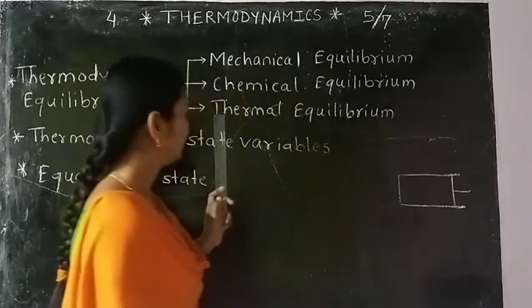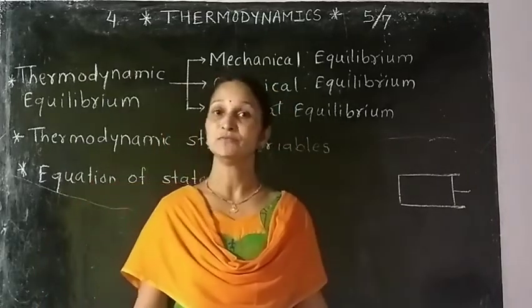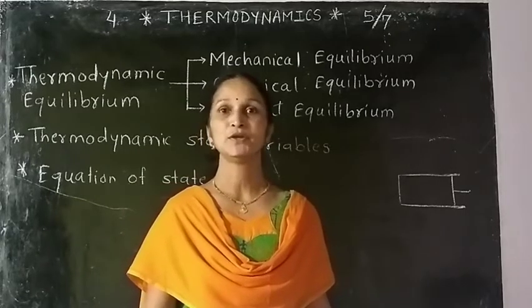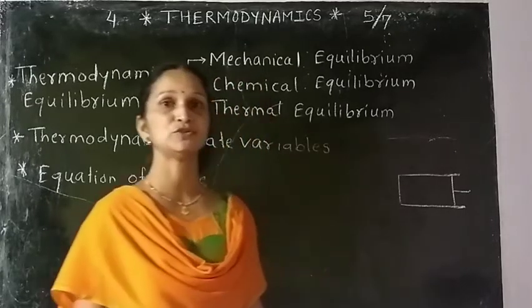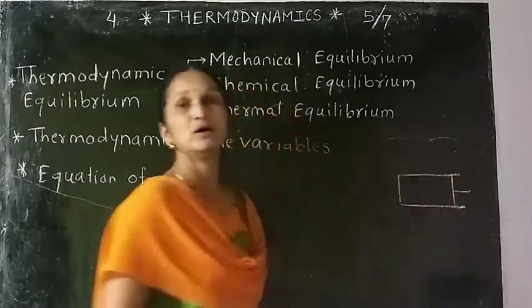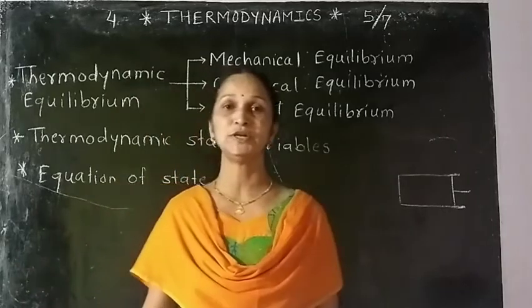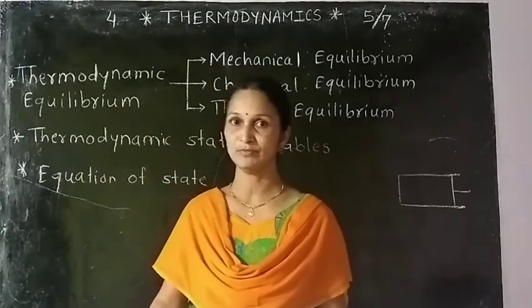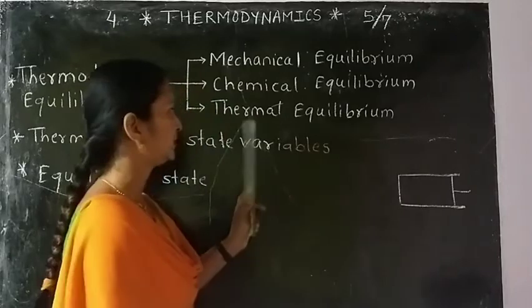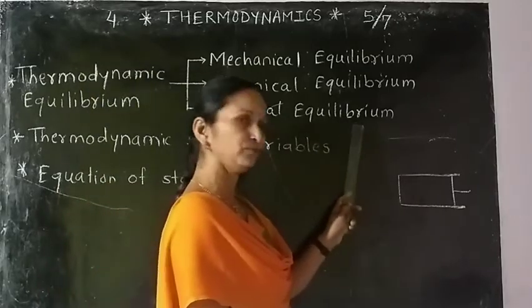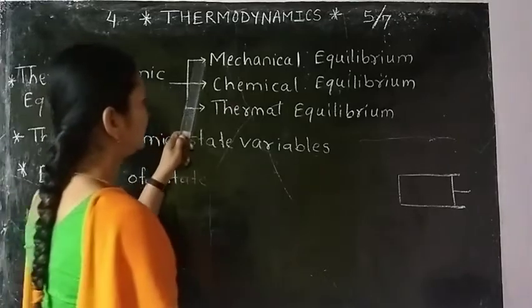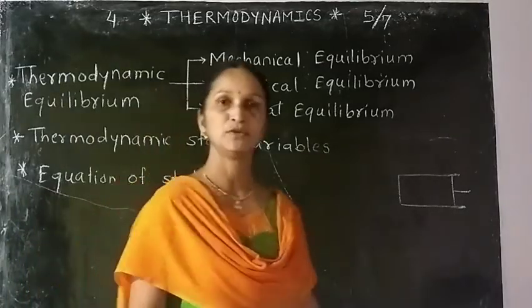The system is said to be in thermal equilibrium if the temperature of the system is the same throughout, and there is no change in temperature with time. The system is said to be in thermodynamic equilibrium if it follows all three equilibria.